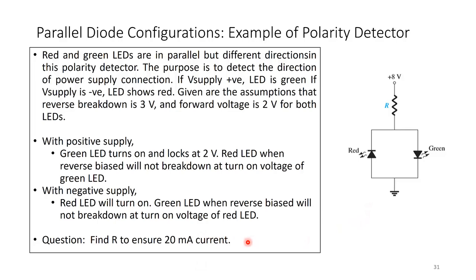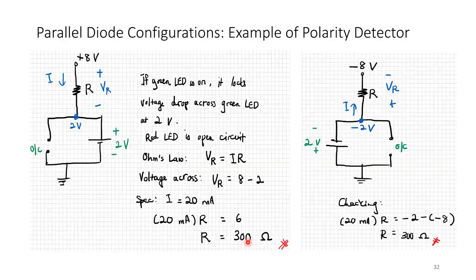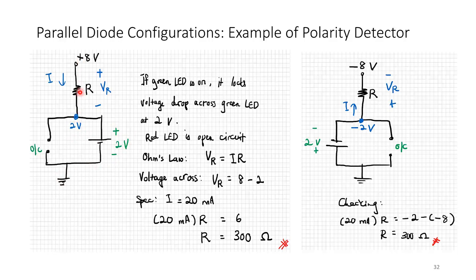The question: find R to ensure 20 milliamp current through the LED. When the green LED is on, it locks the voltage at 2 volts and the red LED is open circuit. VR equals 8 minus 2 equals 6 volts. Applying Ohm's law: VR equals IR equals 20 milliamps times R, giving R equals 300 ohms.